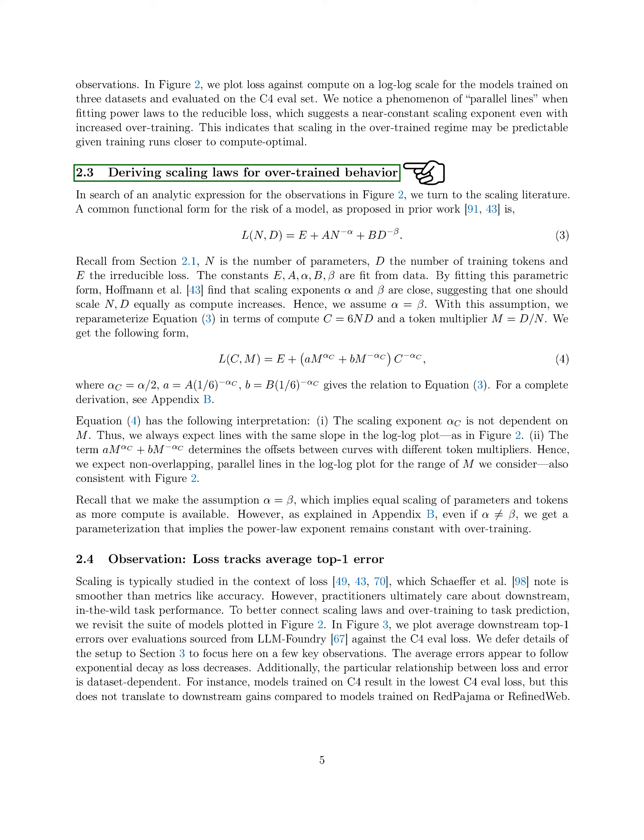Section: Deriving Scaling Laws for Overtrained Behavior. In this section, we derive scaling laws for overtrained behavior. In our search for an analytic expression for the observations in the figure, we refer to the scaling literature. A common mathematical form for the risk of a model, as suggested in previous studies, involves parameters such as the number of parameters n, the number of training tokens d, and the irreducible loss e.